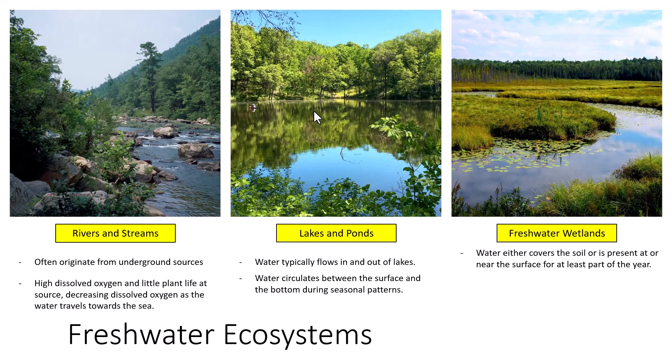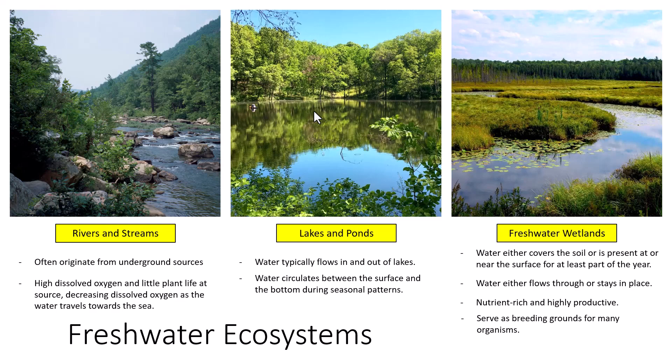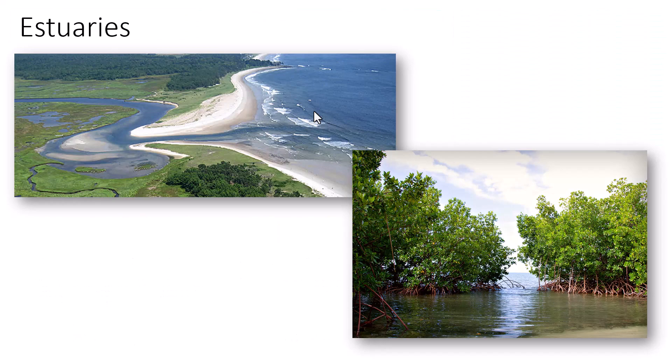Freshwater wetlands are areas where water either covers the soil or is present at or near the surface for at least part of the year. They are very nutrient-rich and highly productive, often serving as breeding grounds for many organisms like migratory birds and as staging grounds during migrations. They purify water by filtering pollutants and prevent flooding — which is why many wetlands around the country are protected as water purification hubs.